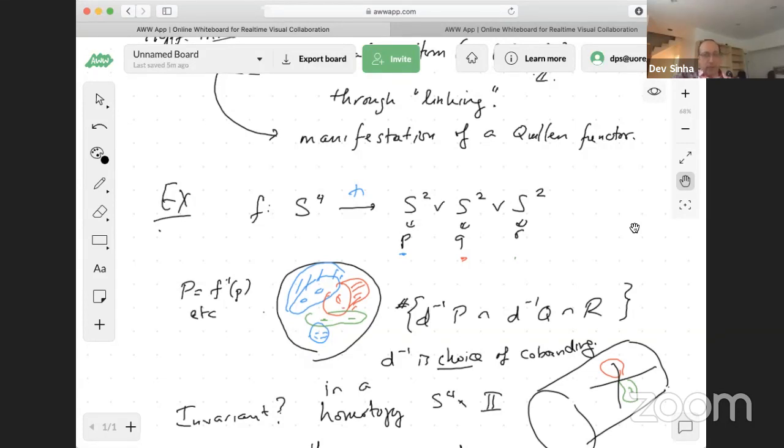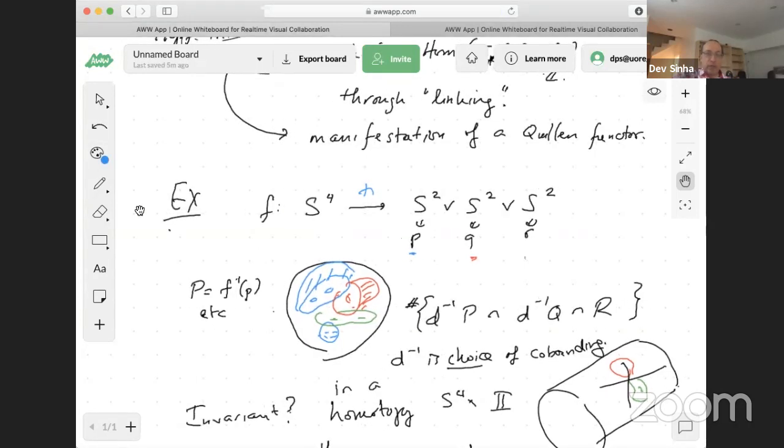And I'm assuming some transversality, and throughout these lectures, I'll assume a fair amount of transversality. Of course, if you're writing papers, you need to check that, but for giving lectures, I will spare you such details. But this is assuming it, we don't need to check it in a particular example yet. You look at the pre-images of P, Q, and R, and there will be three surfaces. And what I've drawn in addition is choices of co-boundings. That's what I mean by this D inverse of P here is a choice of co-bounding of the surface P. And so that'll be some three-dimensional manifold with boundary. And D inverse Q is going to be some choice of co-bounding of Q. And that's also a three-dimensional manifold with boundary. And then R itself was a surface.